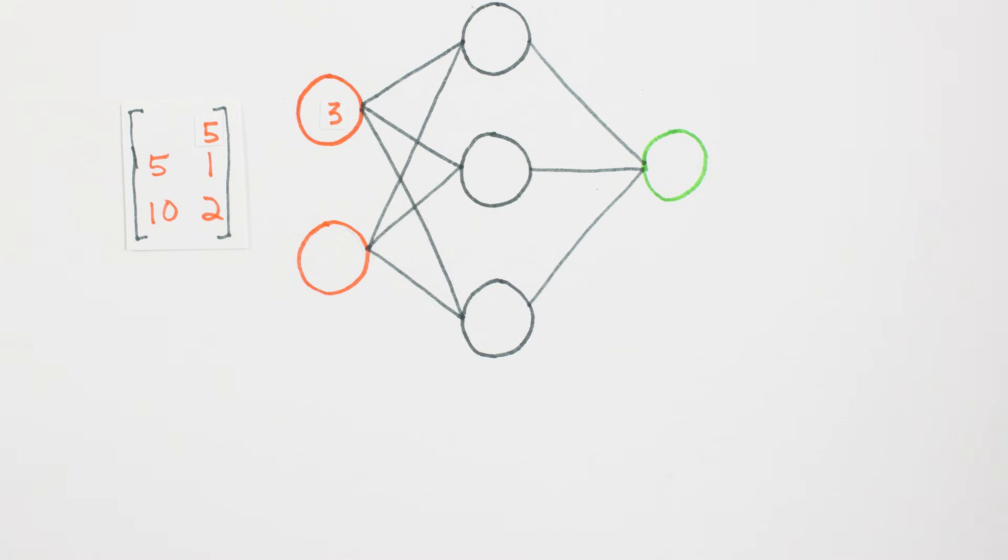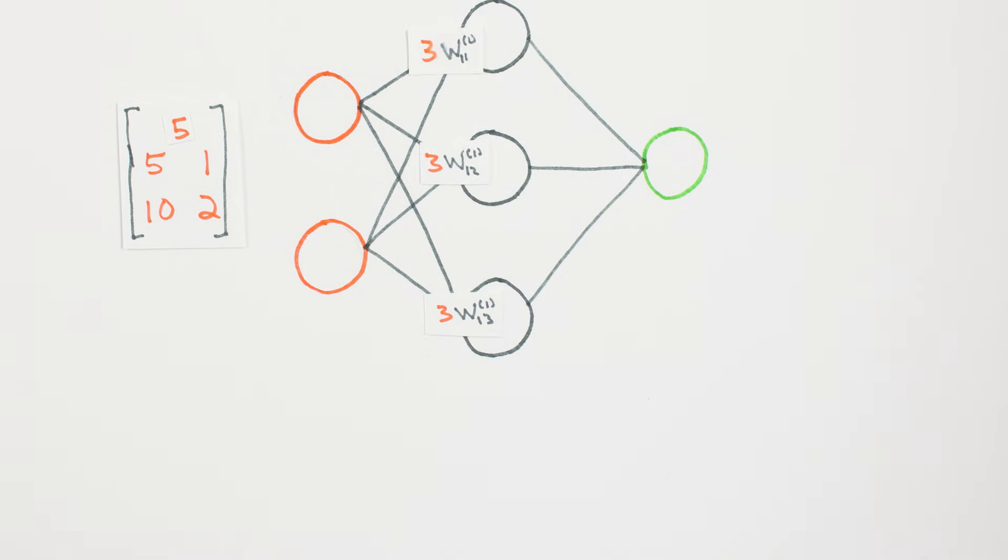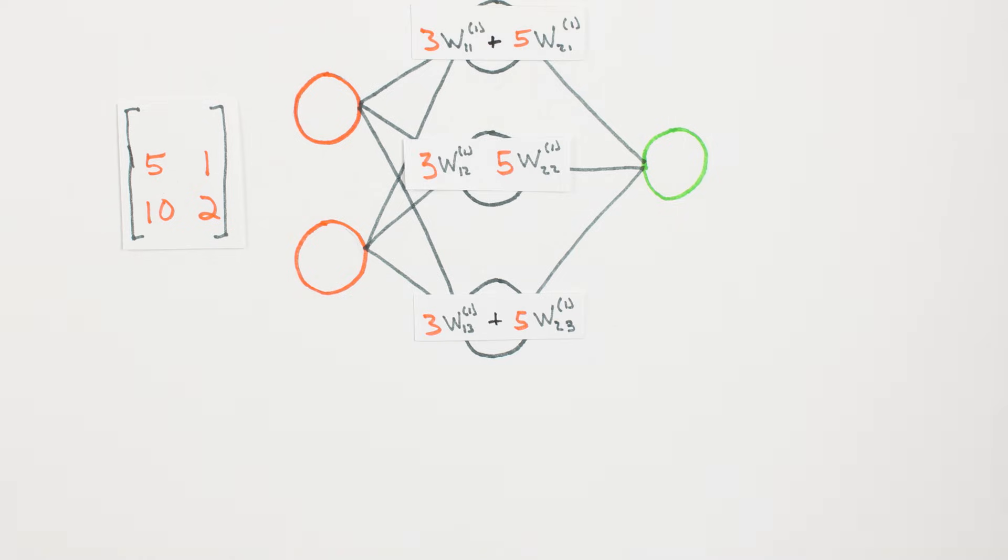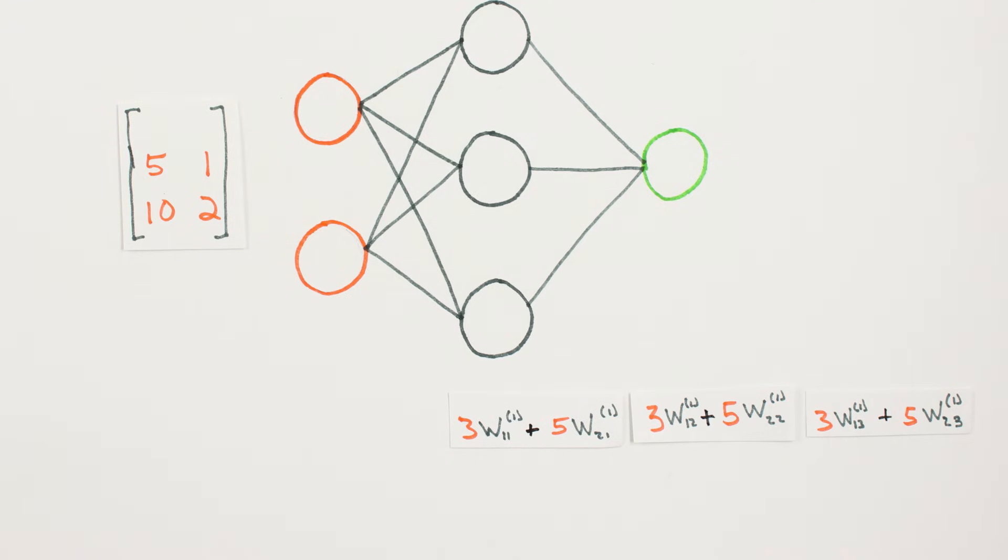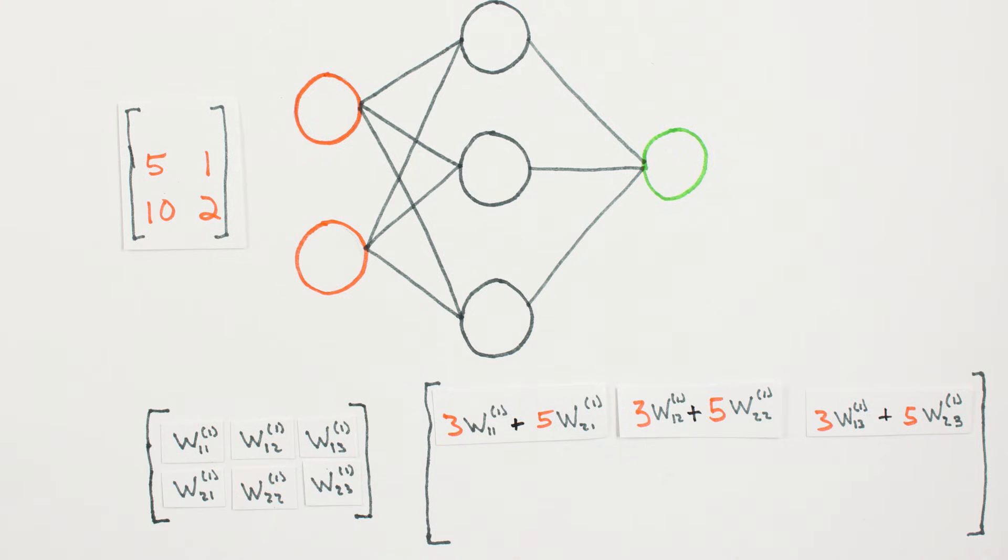Each input value, or element in matrix X, needs to be multiplied by a corresponding weight, and then added together with all the other results for each neuron. This is a complicated operation, but if we take the three outputs we're looking for as a single row of a matrix, and place all our individual weights into a matrix of weights, we can create the exact behavior we need by multiplying our input data matrix by our weight matrix.